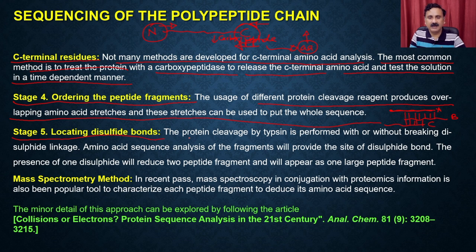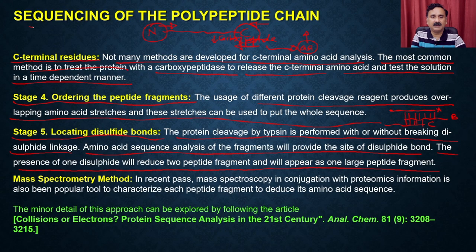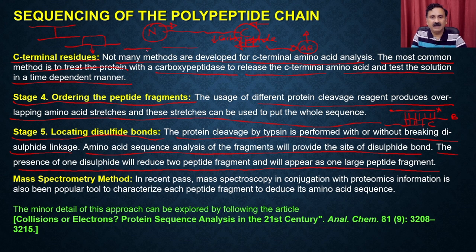Stage 5 is to locate the disulfide bonds. The protein cleaved by trypsin is processed with or without breaking the disulfide linkages — amino acid sequence analysis of fragments will provide the site of the disulfide bond. The presence of a disulfide bond will cause two fragments to appear as a single large fragment. If there is a disulfide linkage, it will keep both fragments bound, giving a single fragment. If you get a single fragment when there should be two, then a disulfide linkage is present.